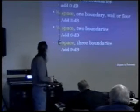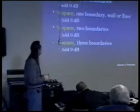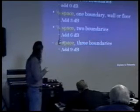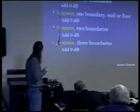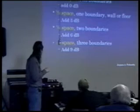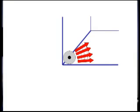And if you can actually stick it in a corner, which would be an eighth space, you'd have three boundaries in a corner, and you actually add 9 dB of signal.